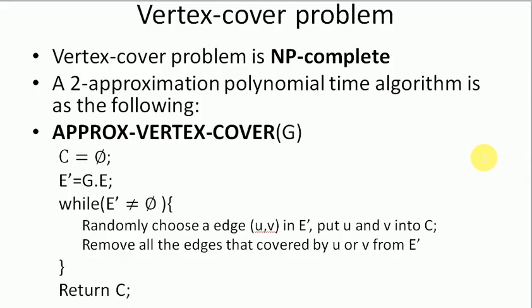Approx vertex cover G. C is a set of pairs consisting of a graph and a positive integer. C equals phi, the null set. E' is the set of edges. G contains the edges E and vertex V. We start the while loop: while E' not equal phi, randomly choose an edge (U, V) in E' and put U and V into C. Remove all the edges that are covered by U or V from E'. At last we have to return C.